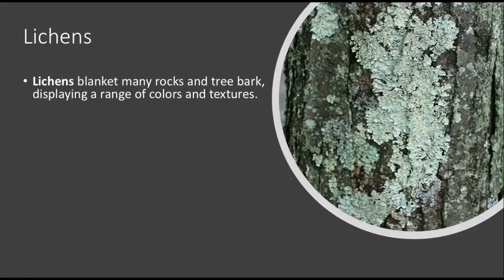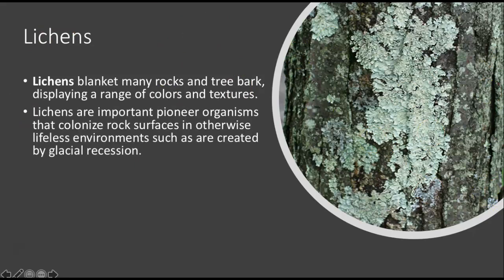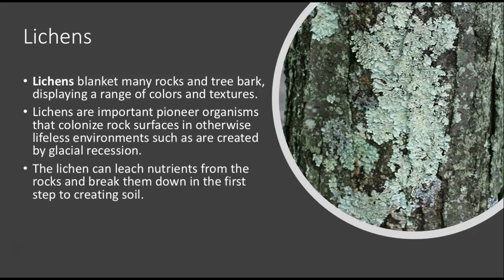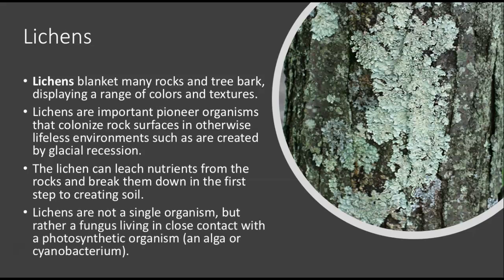Let's talk about lichens. Lichens blanket many rocks and tree bark and appear in a range of colors and textures. They are important pioneer organisms because they can colonize rock surfaces in otherwise lifeless environments, such as those created by glacial recession. While a plant cannot grow on a rock with no soil, lichens can leach nutrients from the rocks themselves, beginning to break them down — which is the first step in creating soil that other plants would need.